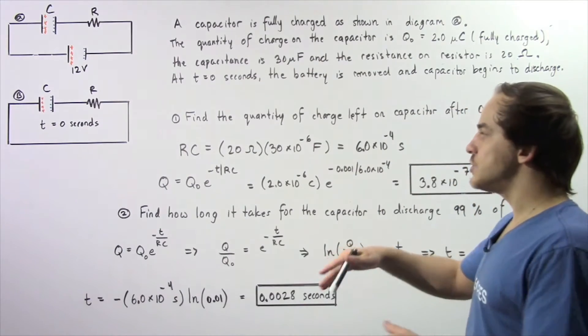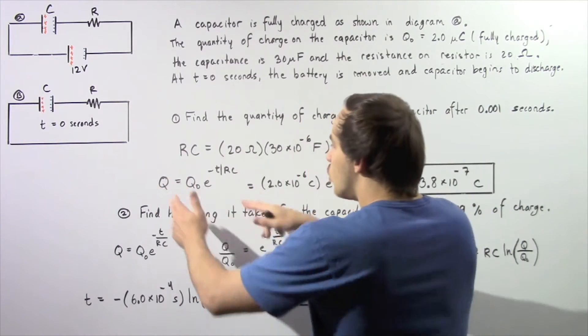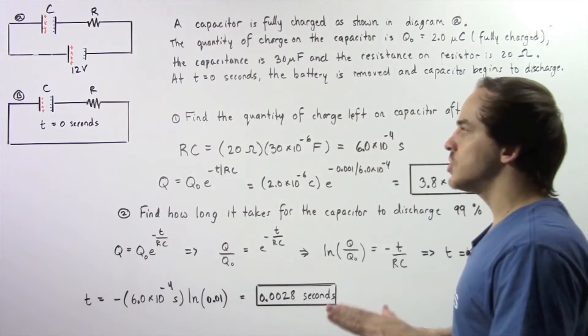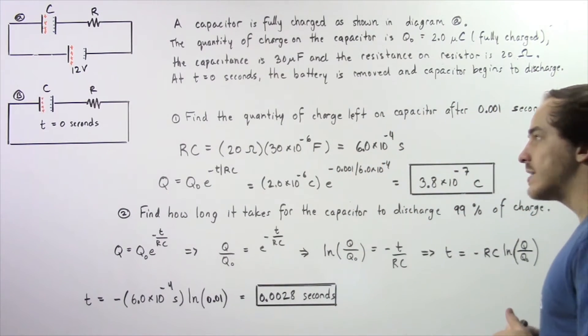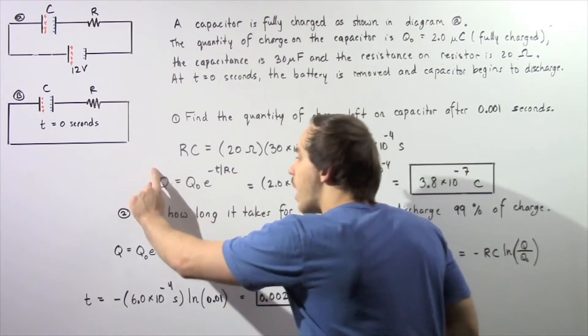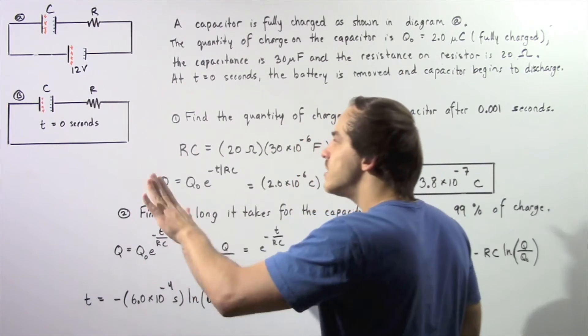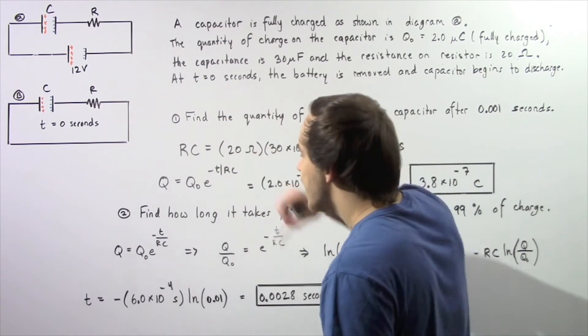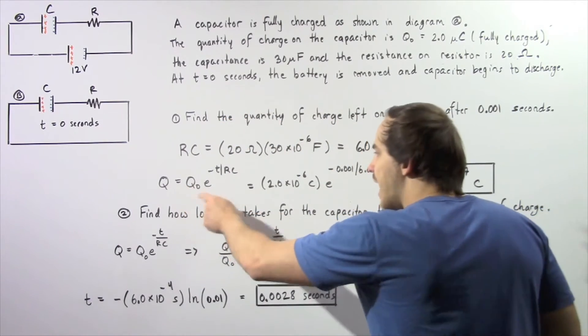Now let's move on to this step. We take the equation that we derived in the previous lecture, which tells us the quantity of charge Q that is left on our capacitor after some time T.